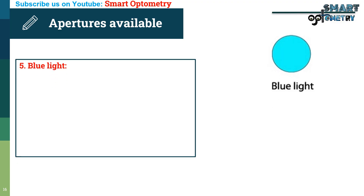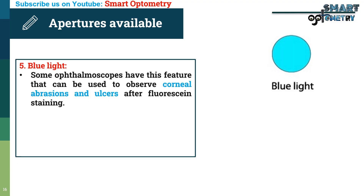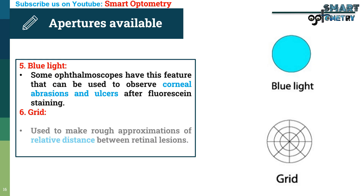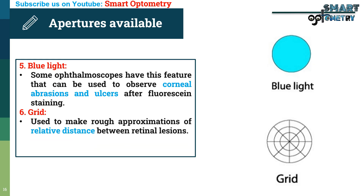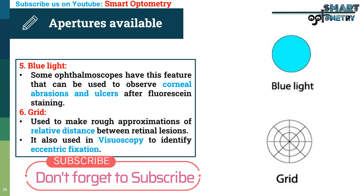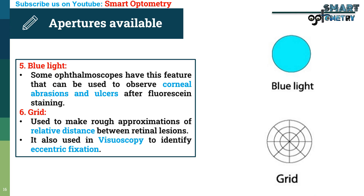5. Blue light: some ophthalmoscopes have this feature, which can be used to observe corneal abrasions and ulcers after fluorescein staining. 6. Grid: used to make a rough approximation of relative distances between retinal lesions. It is also used in visuoscopy to identify the amount of eccentric fixation.